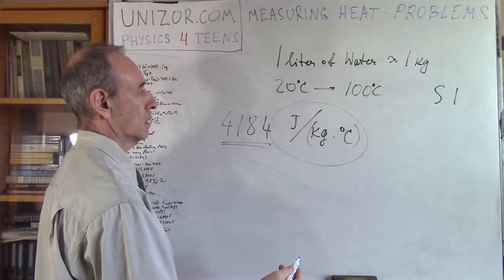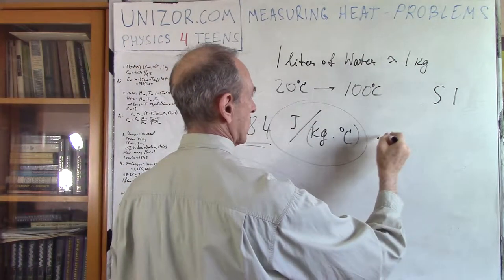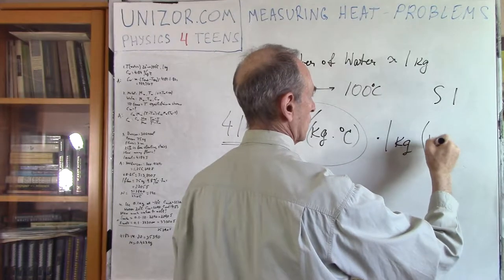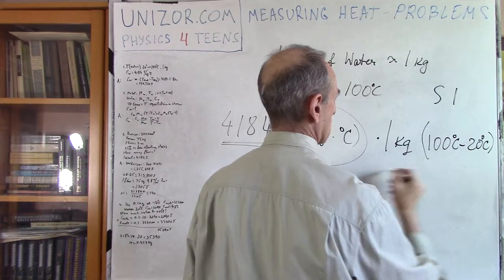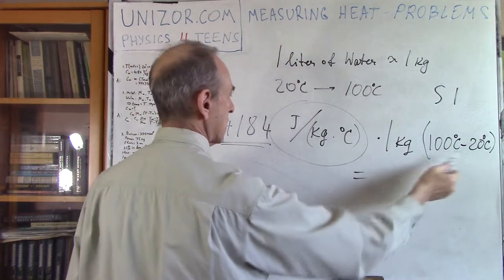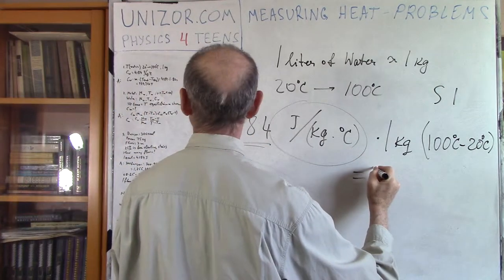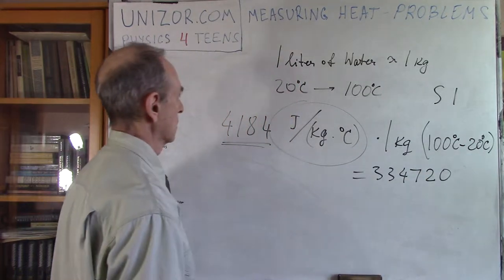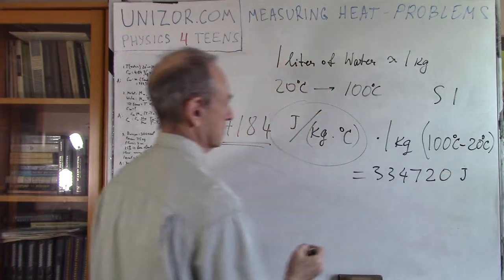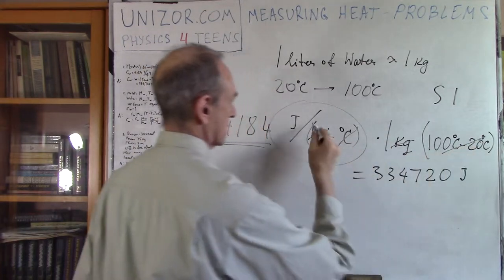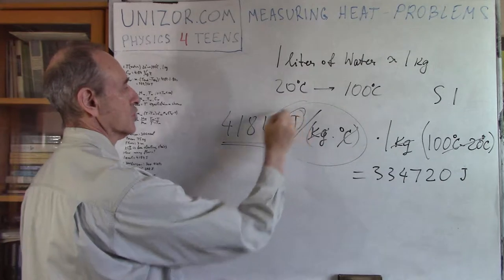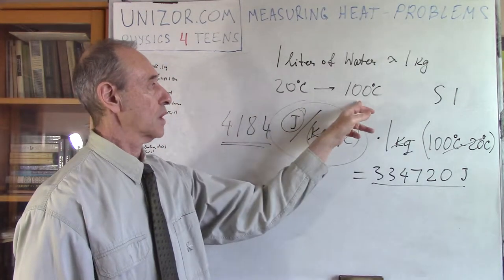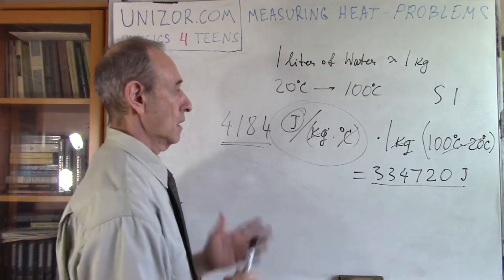Now, we have to heat up one kilogram of water, so we multiply 4184 by one kilogram, and by the difference in temperature: 100 minus 20, which is 80 degrees. So it's 80 times 4184, and the result is 334,720 joules. That's the amount of heat necessary to heat up one kilogram of water from 20 to 100 degrees Celsius. That's a very simple problem — all we needed is the specific heat capacity value, which is given as part of the problem.